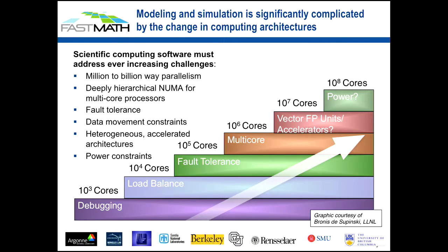Things are getting increasingly more challenging as the machines get more complex. Right now we're going through a pretty fundamental shift in what architectures look like — they're much more heterogeneous. There's going to be much more fault tolerance that we need to build in. As you increase the number of cores, the kinds of things you have to worry about when developing numerical methods start to change. What does it mean to debug something when you have a million processes? Printf, although still often used, is no longer as friendly a tool as when you had one or two processors.